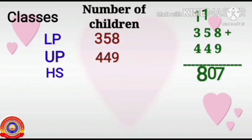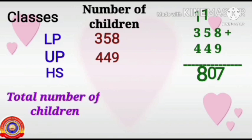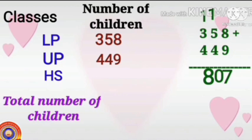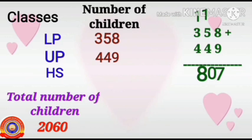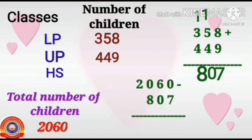To find out the number of children in high school classes, subtract this 807 from the total number of children. How many children are there in total? 2,060. So, subtract 807 from 2,060. That is 2,060 minus 807.